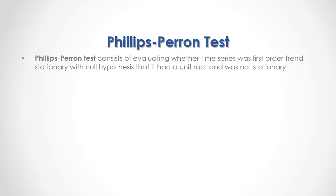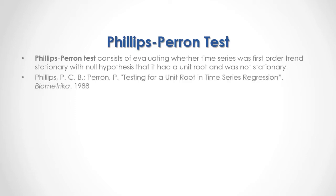The Phillips-Perron test consists of evaluating whether a time series was first-order trend stationary, with the null hypothesis that it had a unit root and was not stationary. For full reference, I recommend that you read Phillips and Perron, 'Testing for a Unit Root in Time Series Regression,' published by Biometrica in 1988.